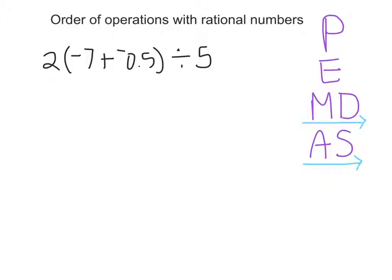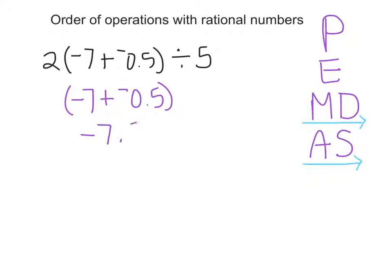The first thing we need to do is follow order of operations — P, parentheses — we've got to solve what's inside the parentheses first. Now when we're looking at rational numbers using these negatives, we have to keep in mind the rules of negative and positive numbers. We have negative 7 plus negative .5. When we have a negative plus a negative, we keep those negative signs, so this is really negative 7.5.